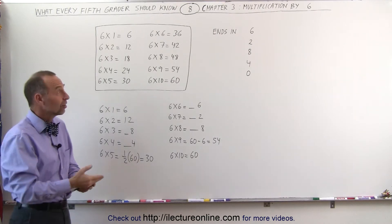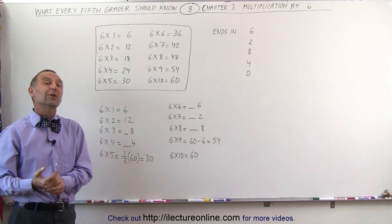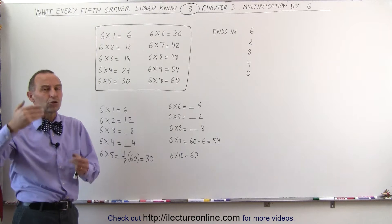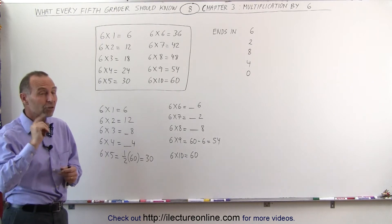6 times 6 is 36, 6 times 7 is 42, 6 times 8 is 48, 6 times 9 is 54, and 6 times 10 is 60. You should try to memorize it just like that. But there's some tricks.